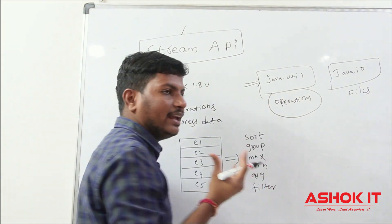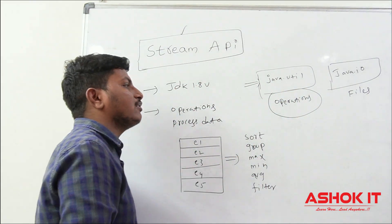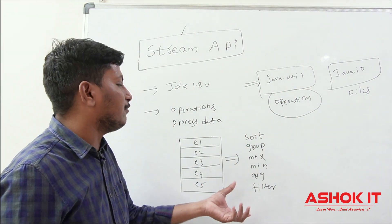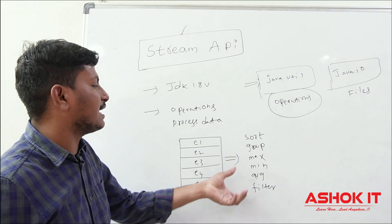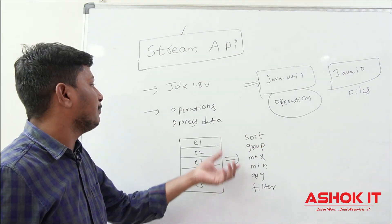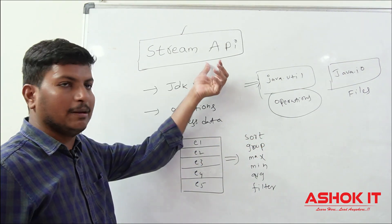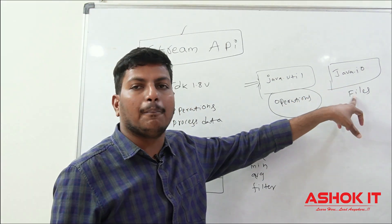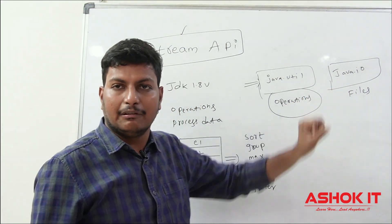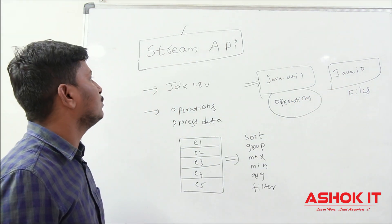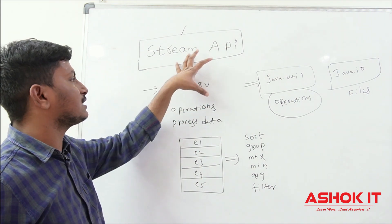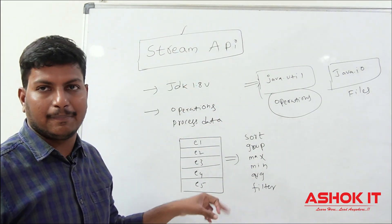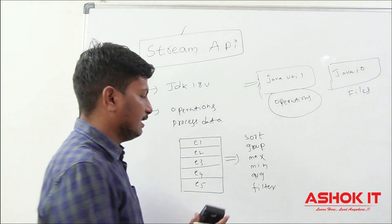java.util streams are used to deal with operations on data — mainly when we have data in the form of an array or a collection. We can easily perform common operations on that data using Stream API. IO streams are used to perform operations on files. In today's session we are going to focus on the java.util Stream API.